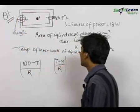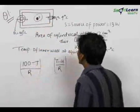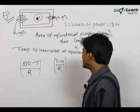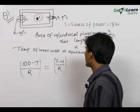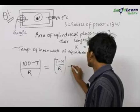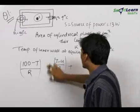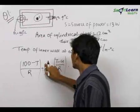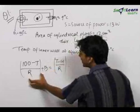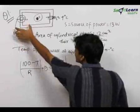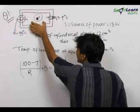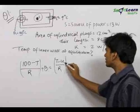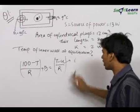We have (T - 4)/R going out, and there is an additional source of power of 13 watts inside the chamber. So we can write: (100 - T)/R + 13 = (T - 4)/R. That is, the net rate at which heat is being generated or coming inside the system should equal the net rate at which heat is leaving the system. This is the formula for heat current: (T1 - T2)/R.